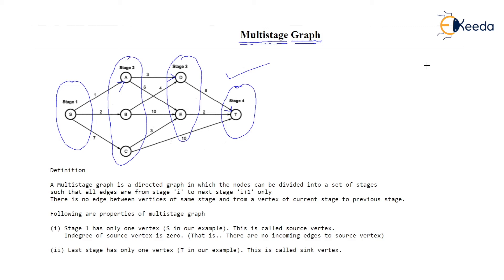Stage 1 over here contains only S, only a single vertex. And stage 4, the last stage, contains only one vertex. This is a peculiar property of a multi-stage graph. In a multi-stage graph, the first stage and the last stage contain only a single vertex. The intermediate stages, like stage 2 and stage 3 in this example, can contain any number of vertices.